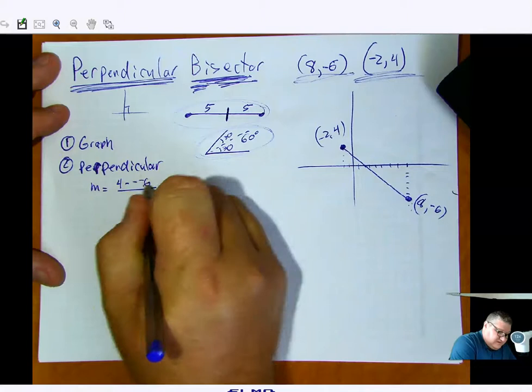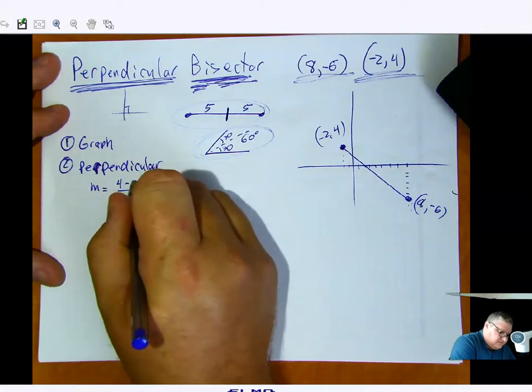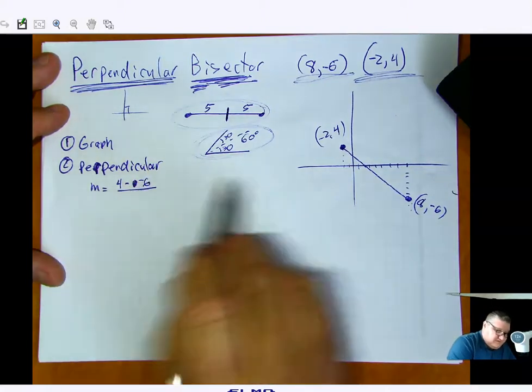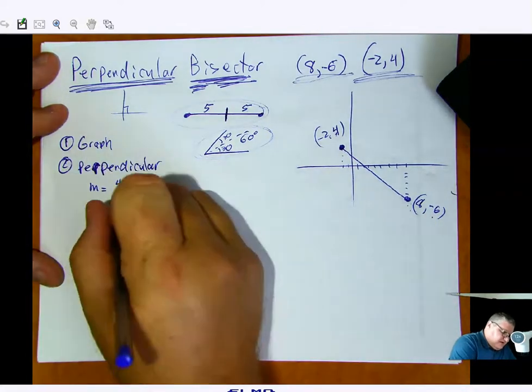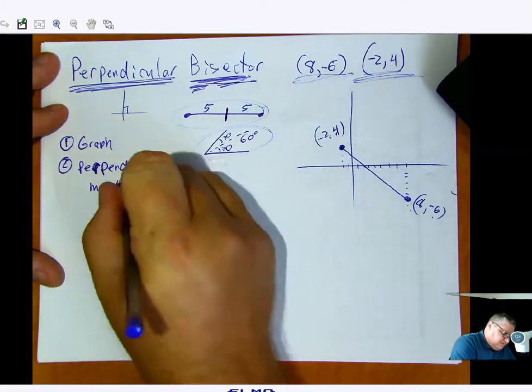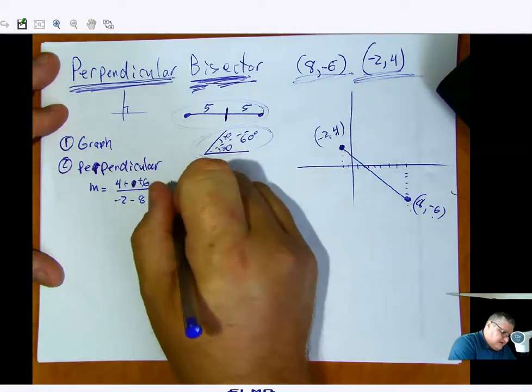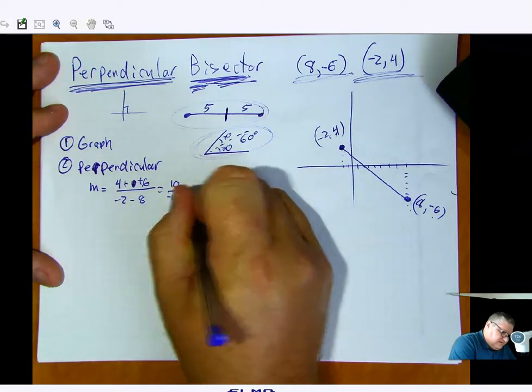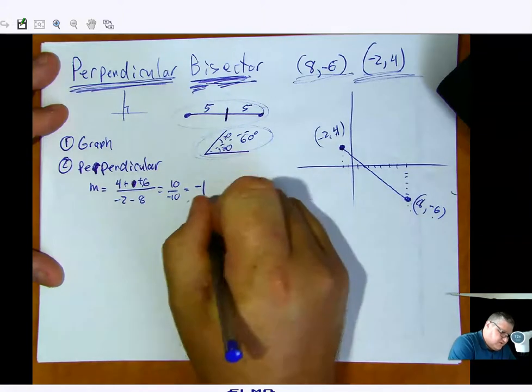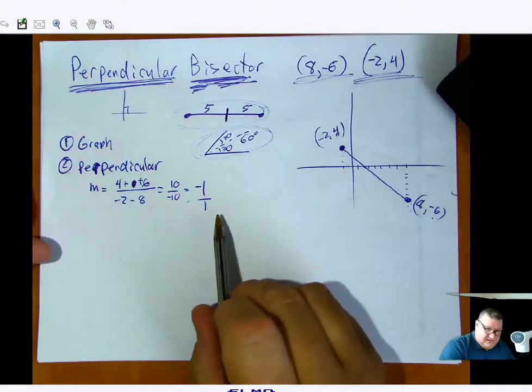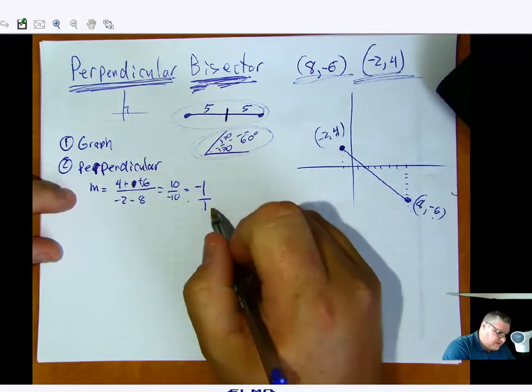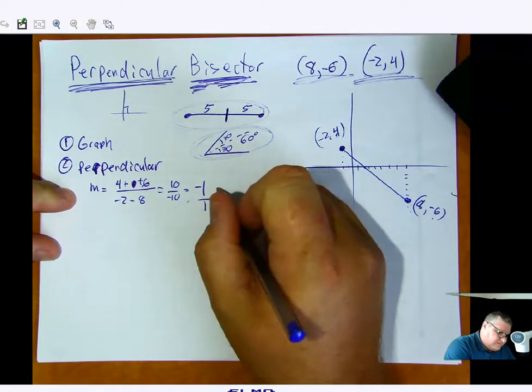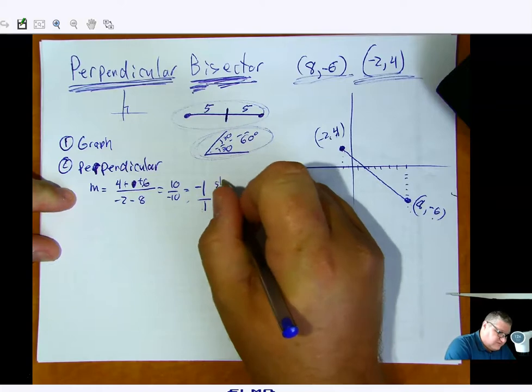So 4 minus negative 6. I got too many negatives in there. Minus negative 6. So 4 take away negative 6. And then negative 2 minus 8. And I get 10 over negative 10. So the answer is negative 1 over 1. Now, the reason I left this as a fraction is because that's the slope of our segment. So that is currently the slope.